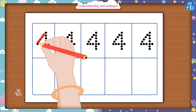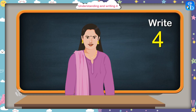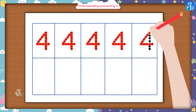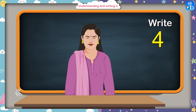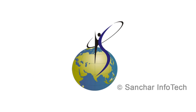Now you have traced the figure of number four. Trace the remaining figures as well. All of you have traced very well. Now I will write four without the help of the dots, and after that you also try to write four without dots. Four! Very nice. Please practice this at home also.